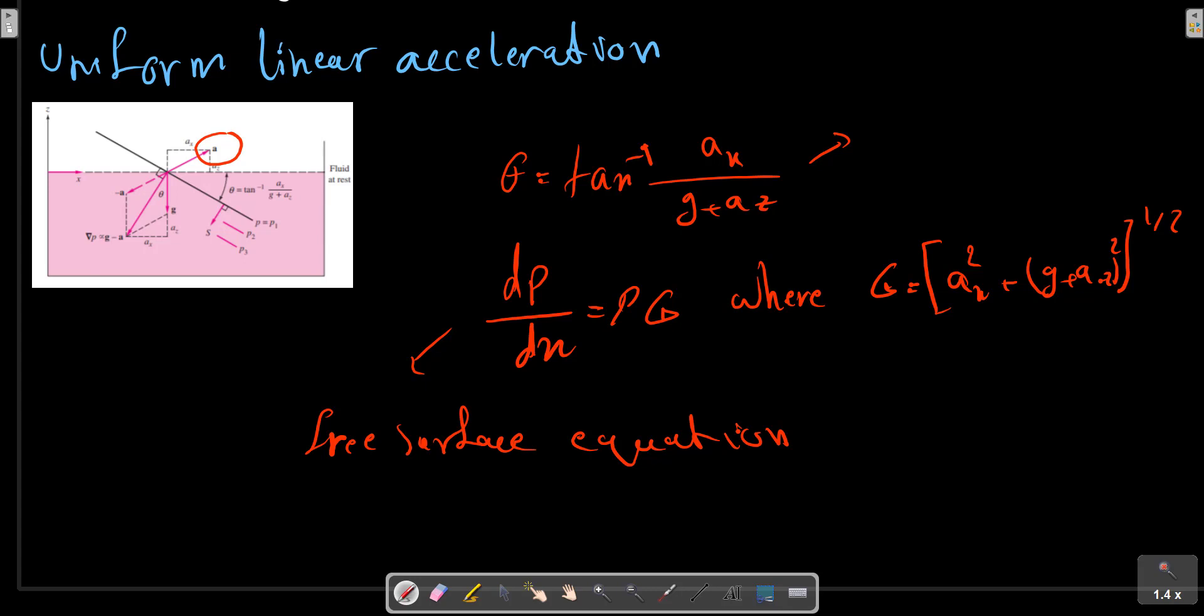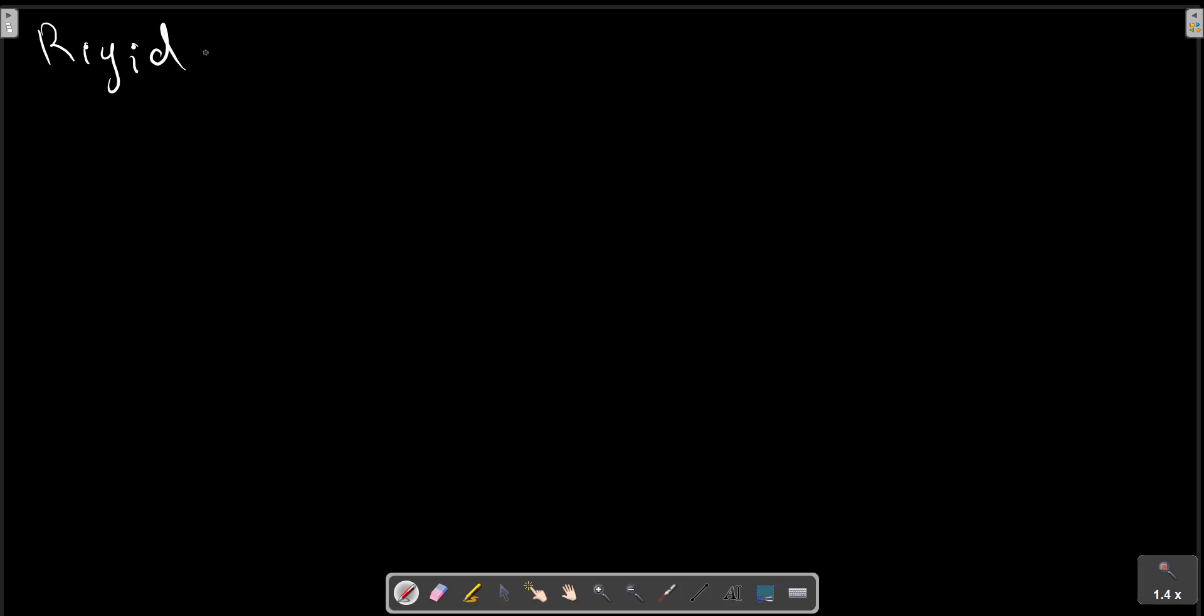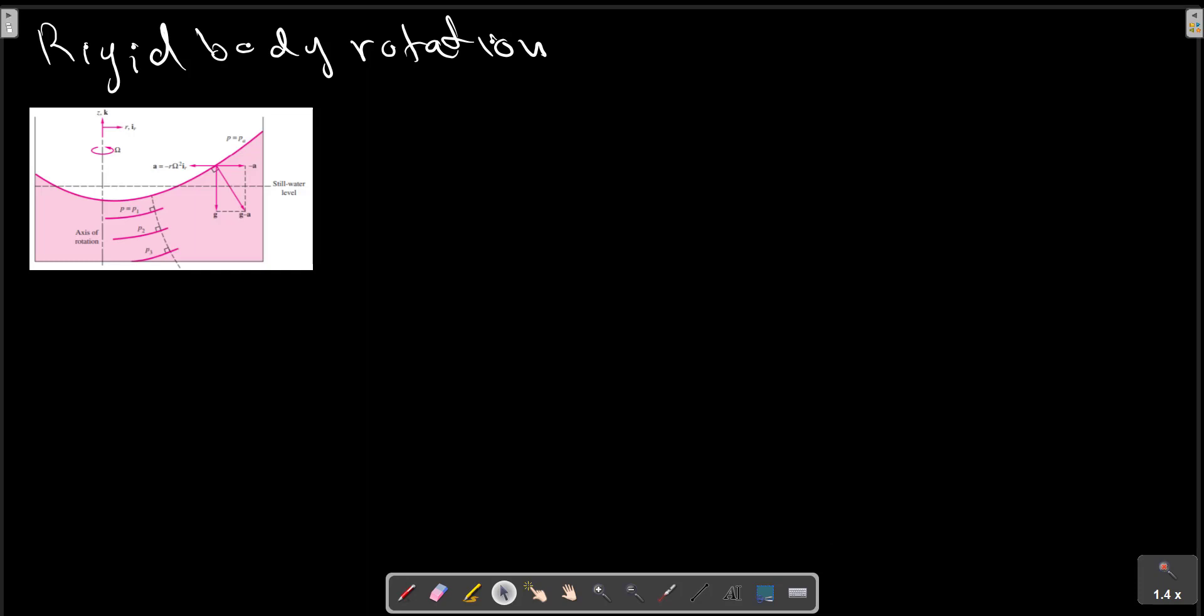The next type of moving fluid is rigid body rotation. As a second special case, consider rotation of the fluid about an axis without any translation. As shown in this picture, we have only rotation with angular velocity omega. We assume that the container has been rotating long enough at constant omega for the fluid to have attained rigid body rotation.